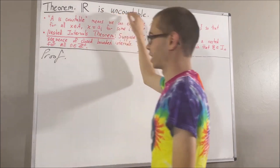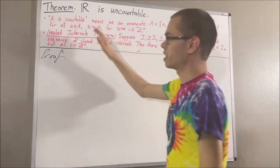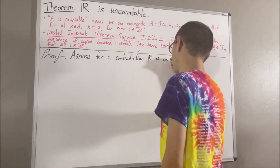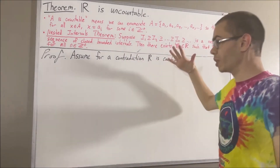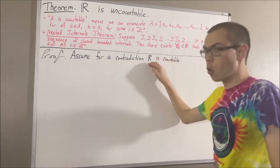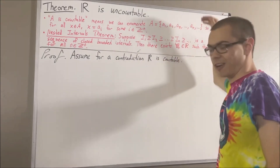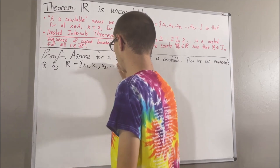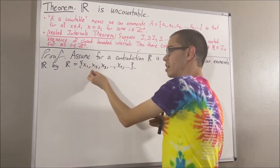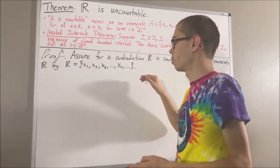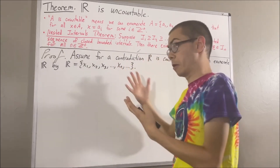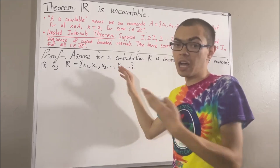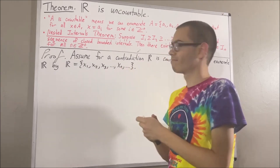Now let's prove that the set of real numbers is uncountable. We'll assume for a contradiction that the set of real numbers is countable. Well then, what this means is we can enumerate the elements of R over the positive integers. In other words, we can list out the elements of R like this. So for every real number x, x lies somewhere in this list — x is equal to x_i for some positive integer i. And that's the idea.